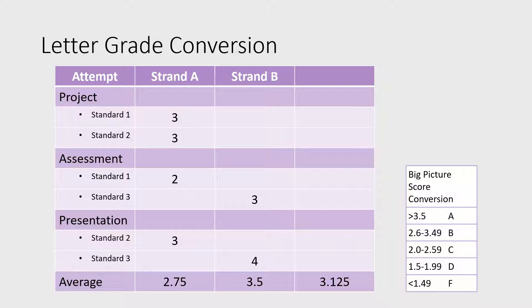Here's another way of looking at the conversion from proficiency scores to letter grades. This table shows three attempts or assessments of learning: a project, an assessment, and a presentation. Standards 1, 2, and 3 are measured with these assessments. Standards 1 and 2 measure learning of a similar group of skills and are in strand A, while standard 3 measures different learning and is therefore in a different strand.